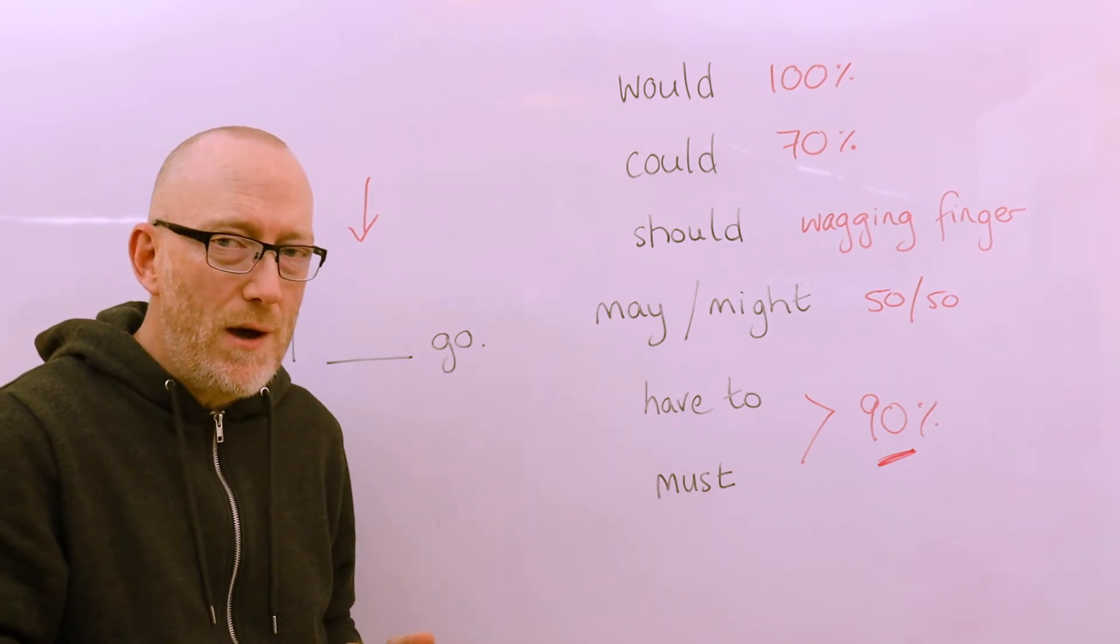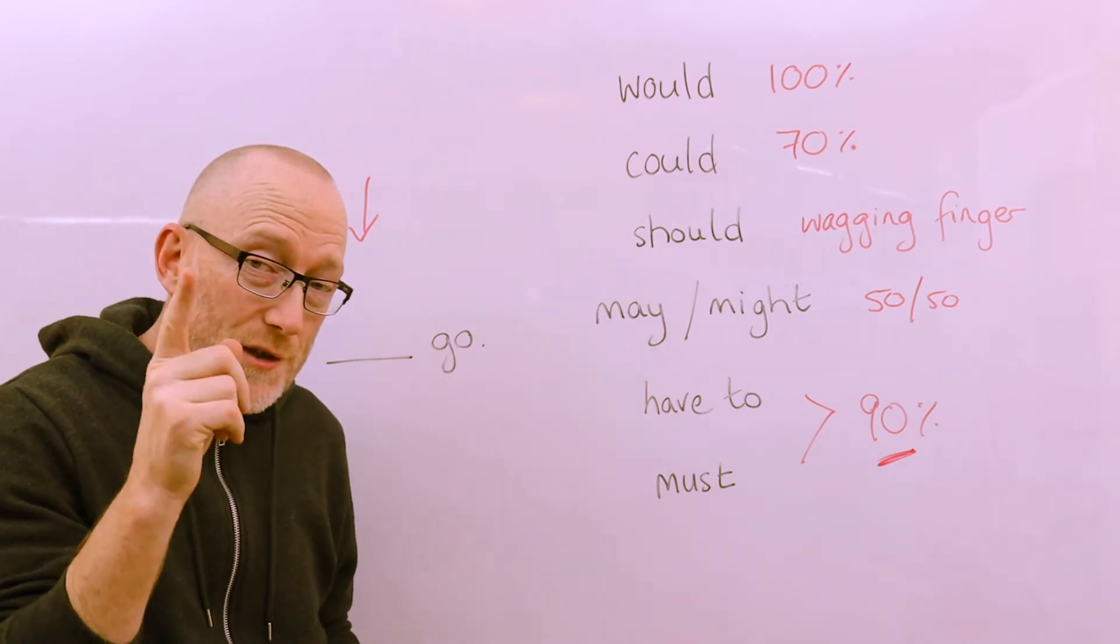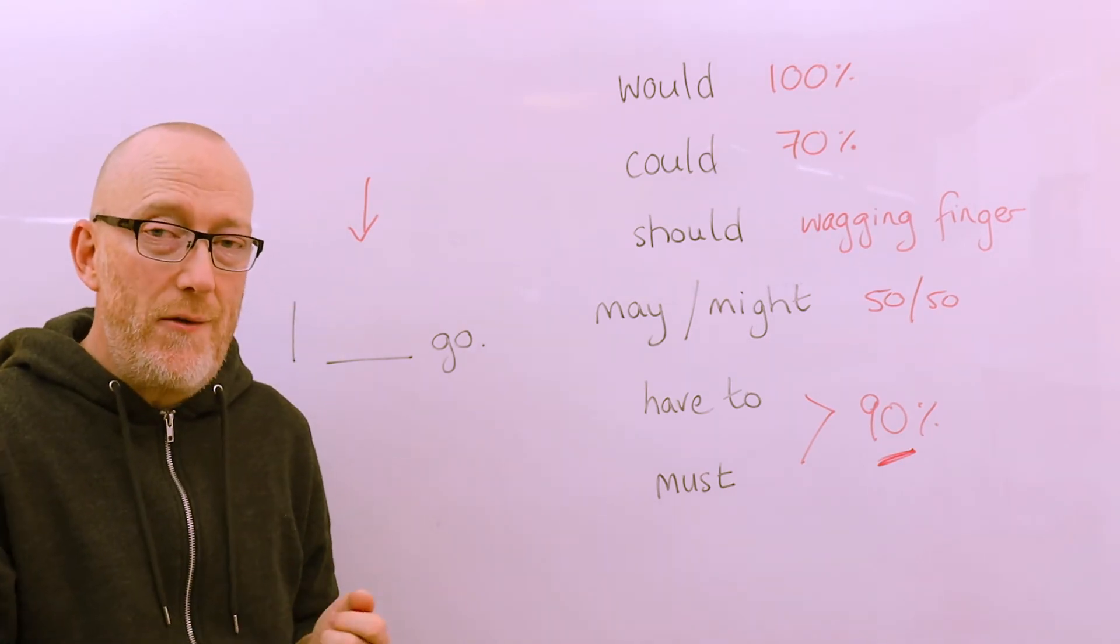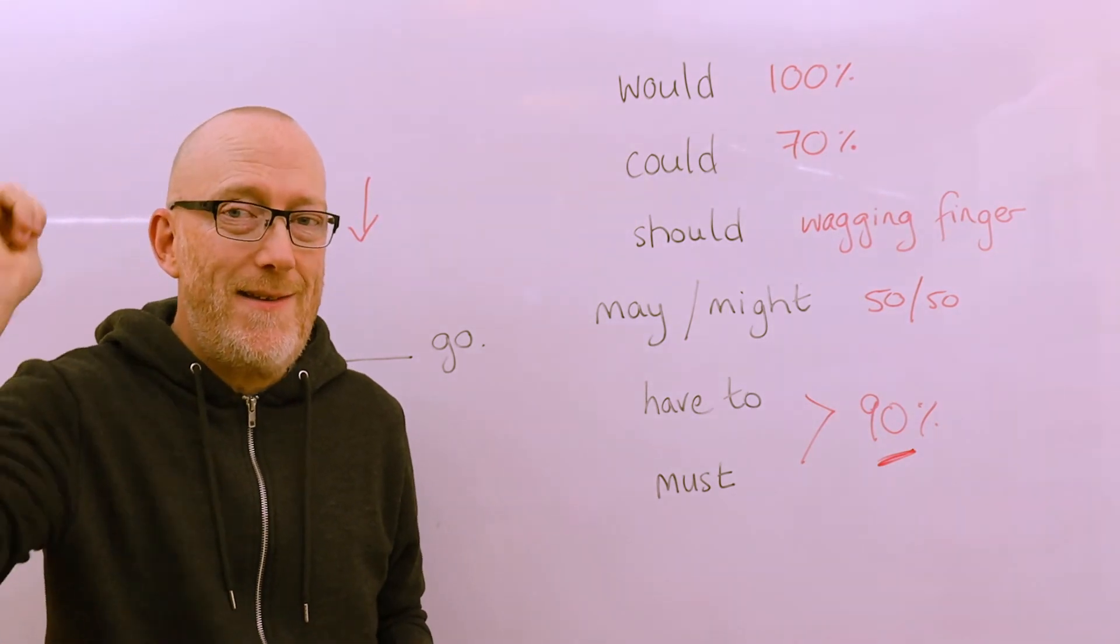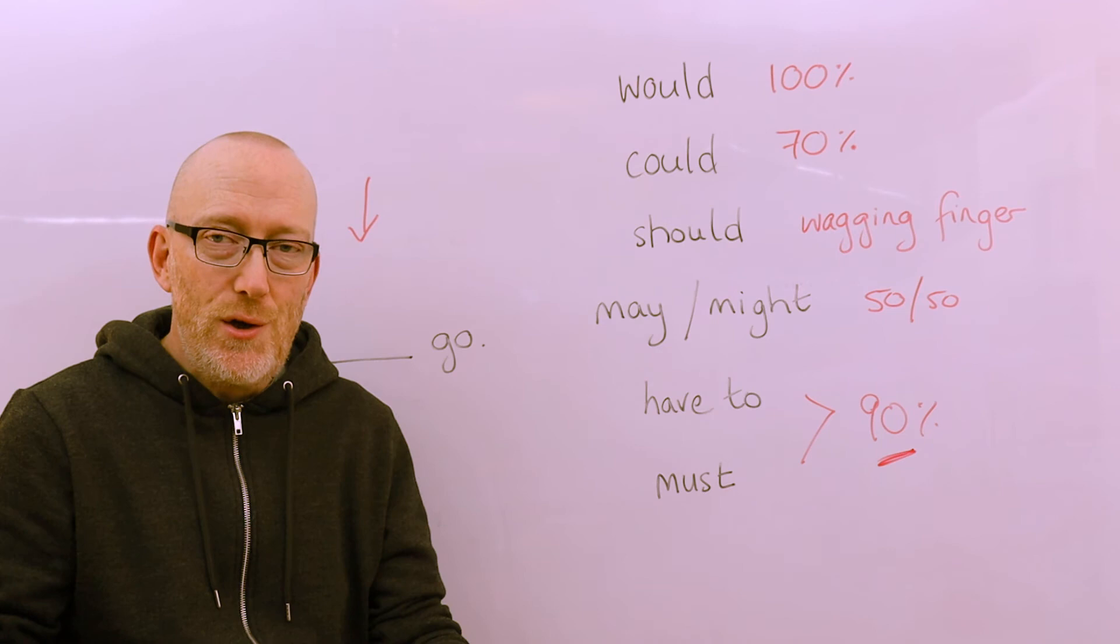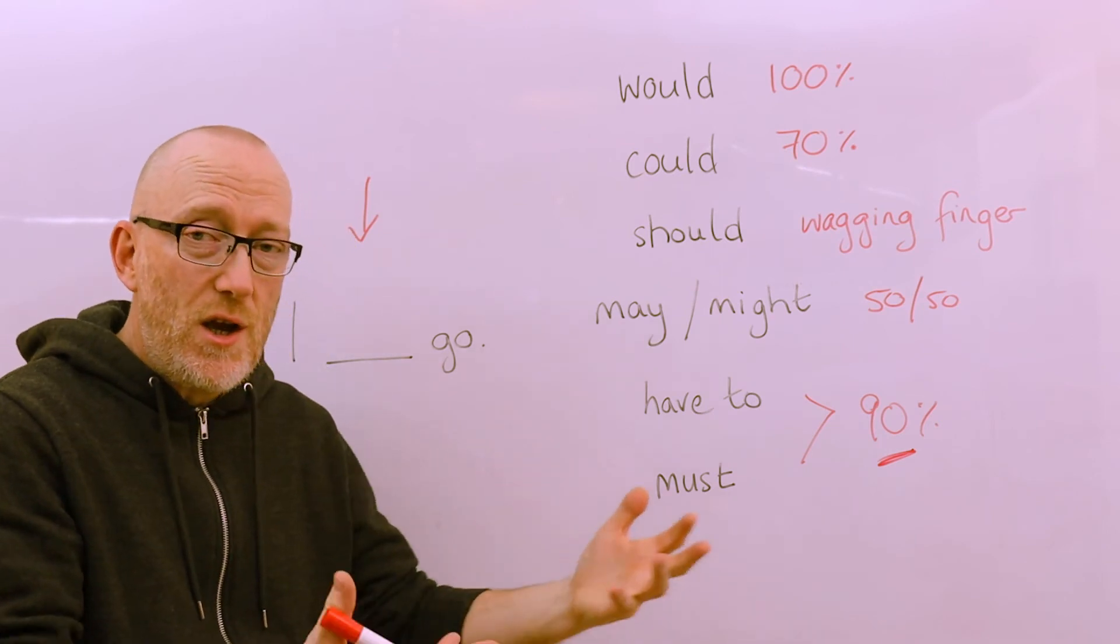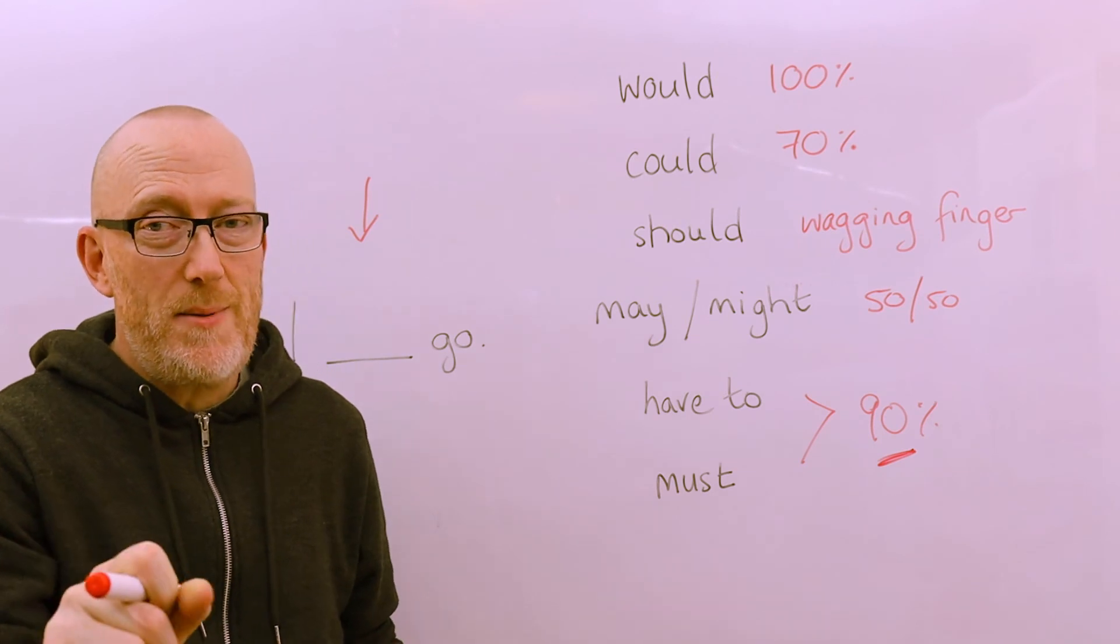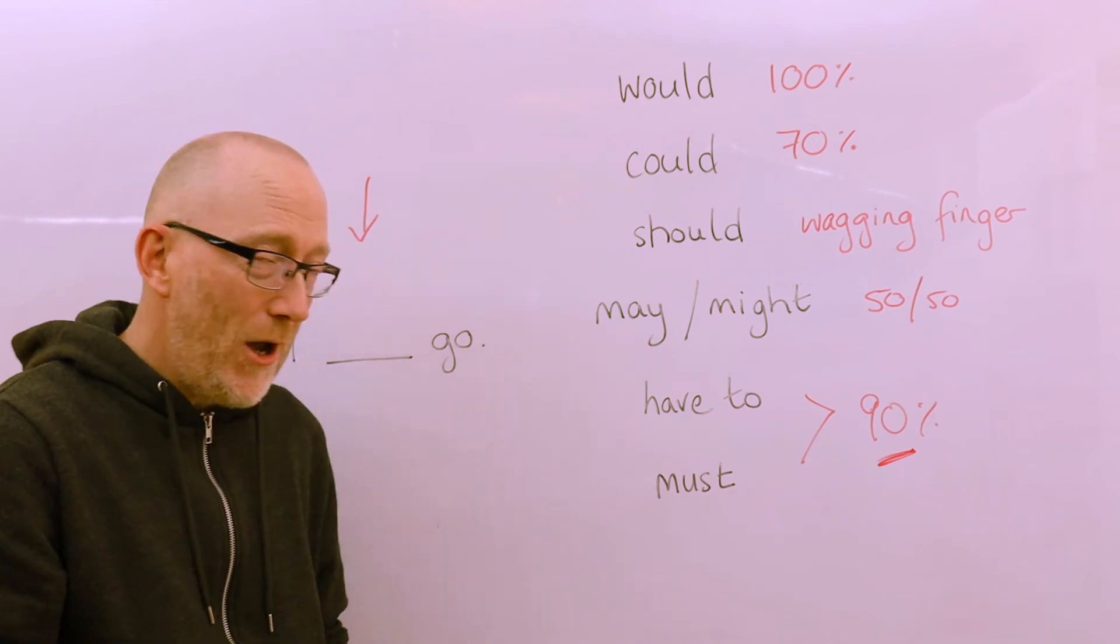So perhaps your wife, your husband, your girlfriend, your boyfriend, your mother, your father is saying you have to go to the party. They're not exactly wagging the finger at you with should, it's a lot stronger than should. They're saying you have to. So it's a modal of obligation, you have to do it, but it's not your choice, somebody else is telling you you have to do it. Whereas must is you deciding on your own that you must do it. I must go to the party. You might not want to go to the party, but you must go to the party.